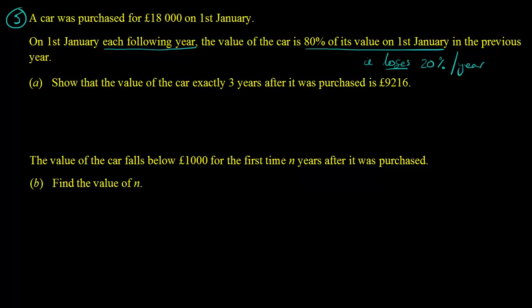OK, now part A is not particularly tricky. We need to show that the value of the car exactly 3 years after it was purchased is that. So, to work out the value, we start with 18,000. Each time we decrease it by 20%, we end up with 80%, so we multiply by 0.8, and we need to do that 3 times, so 0.8 cubed. And that's all there is to it for part A. You just stick that in your calculator, and we get exactly what we're after, £9,216.